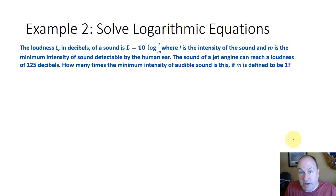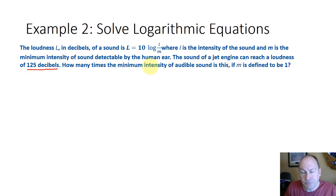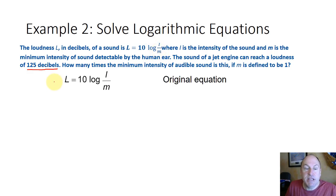Let's use common logarithms to solve a logarithmic equation. This is an important equation from physics — the loudness equation. The loudness in decibels of a sound is L equals 10 times the log of I over M, where I is the intensity of the sound and M is the minimum intensity sound. So if a jet engine has a loudness of 125 decibels, and the minimum intensity sound is defined as 1 decibel, we want to find how many times the jet engine is over the minimum.